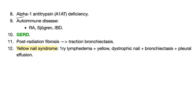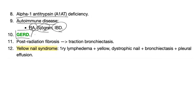More causes include alpha-1 antitrypsin deficiency, autoimmune diseases such as rheumatoid arthritis, Sjögren's syndrome, inflammatory bowel disease, and GERD — big time. Patients with GERD sometimes have asthma, and they could also have bronchiectasis. Post-radiation fibrosis is another cause.